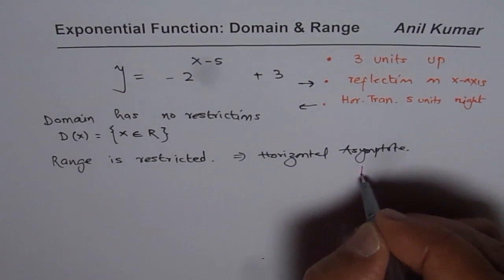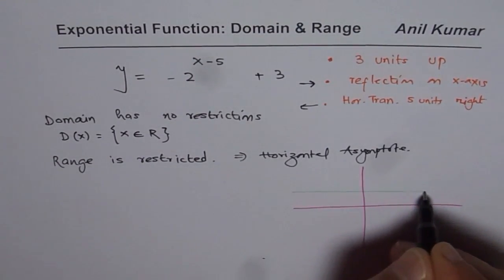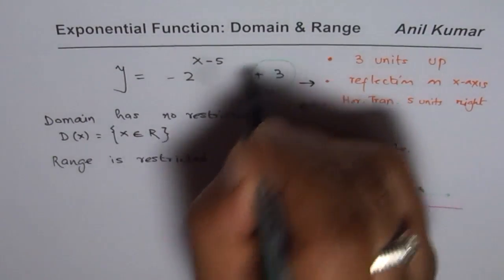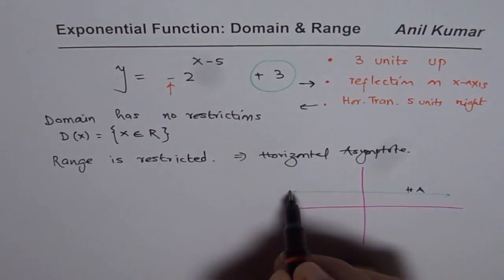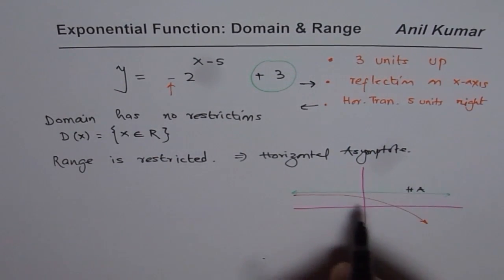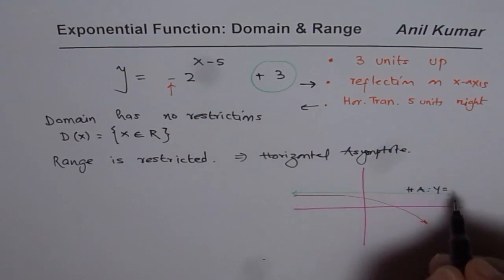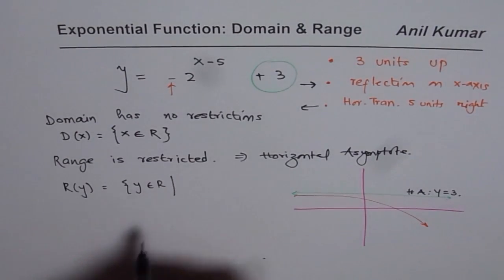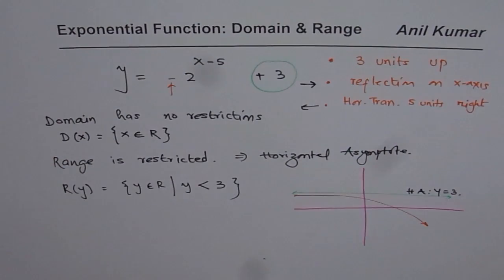Let me sketch this graph. The translation of 3 units up means the horizontal asymptote is at y equals 3. Because of the reflection, instead of the graph going up, it will go below this line. So the graph goes below y equals 3. Therefore, the range for the function is y belongs to real numbers where y is less than 3.